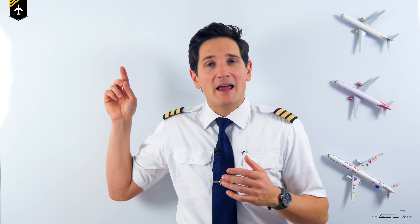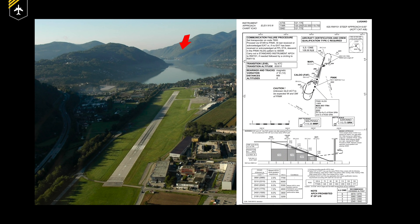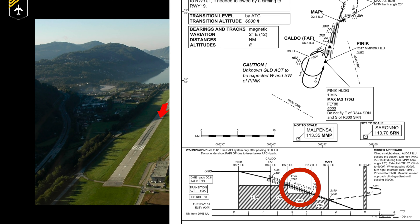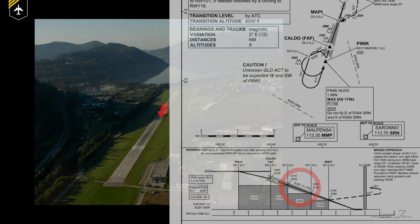A quick heads up: I advise you to watch my previous video on how an ILS works before continuing with this one. The winner of the last contest is Lugano Airport in Switzerland, with the current steepest ILS approach of 6.6 degrees, and the comments about the space shuttle glide slope were absolutely hilarious — so thank you much for that.